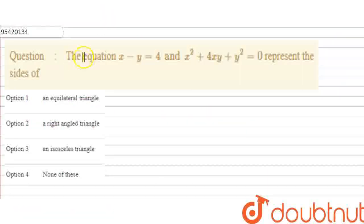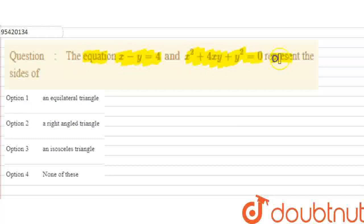Hello friends. What is given in this question? The equation x minus y equals 4, and x squared plus 4xy plus y squared equals 0 — these represent the sides of what? There are 4 options given.